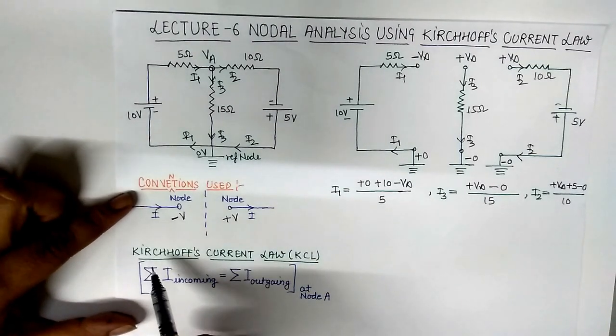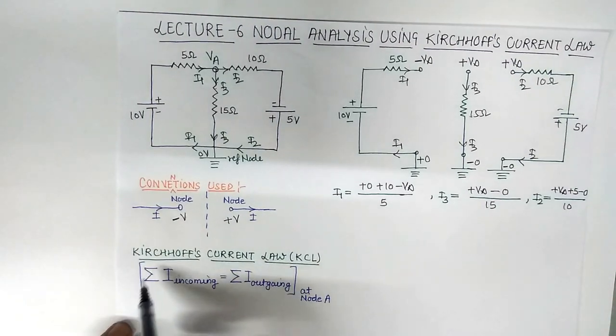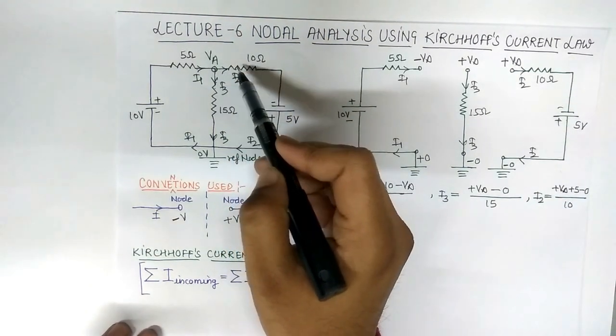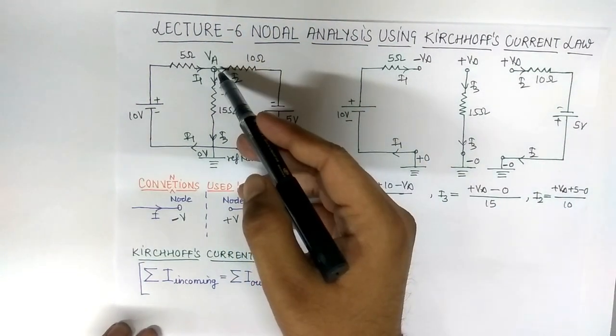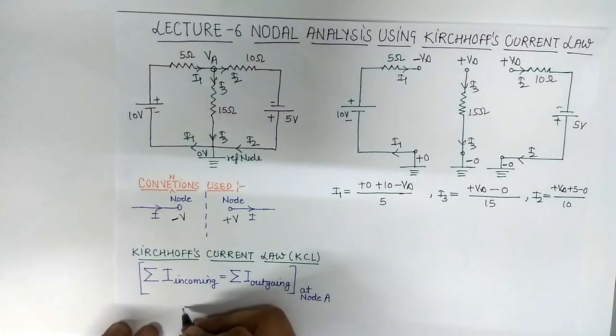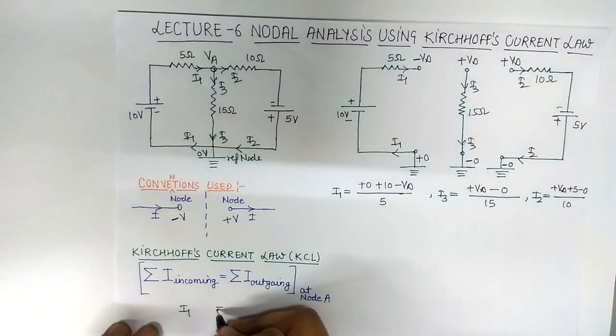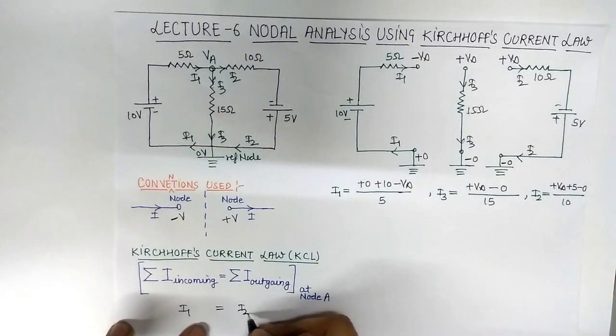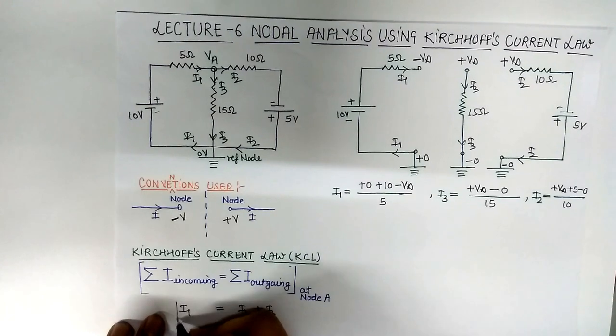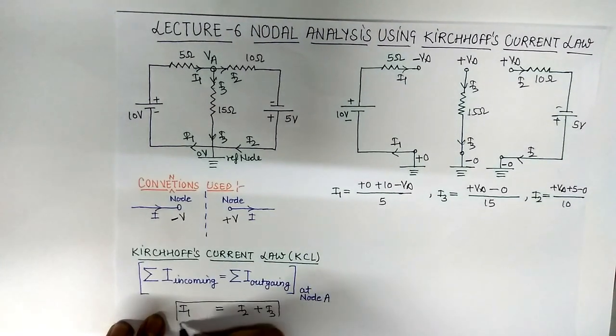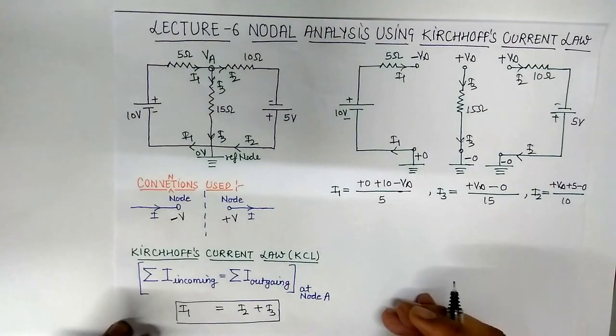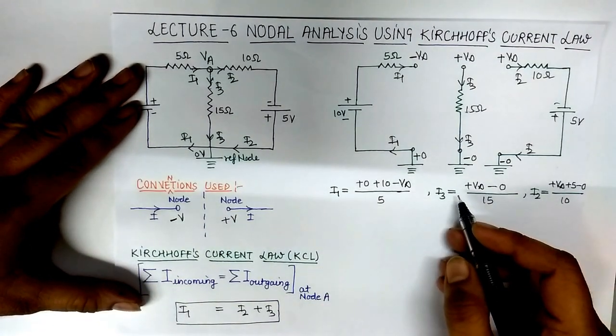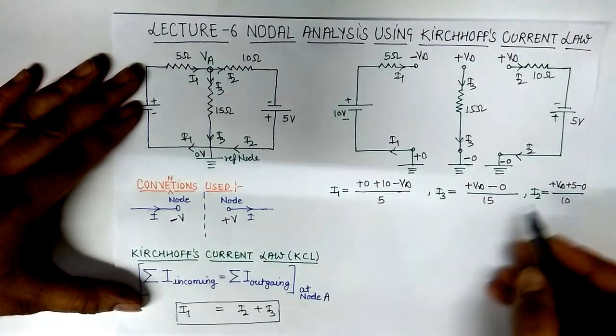Now apply Kirchhoff's Current Law. So this is the Kirchhoff Current Law: all incoming current is equal to all outgoing current. We follow at node A, here incoming current is I1 and outgoing current is I2 and I3. So this is I2 plus I3. So I1 equals I2 plus I3. We already found out the value of I1, I2, and I3. So put these values in this equation.